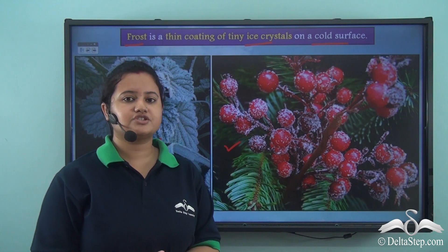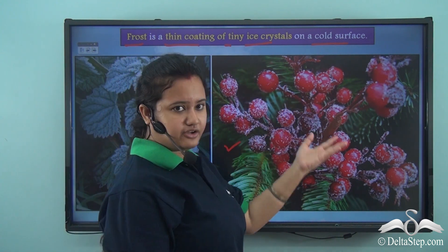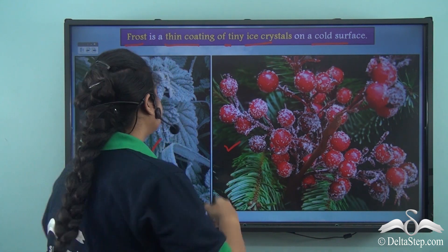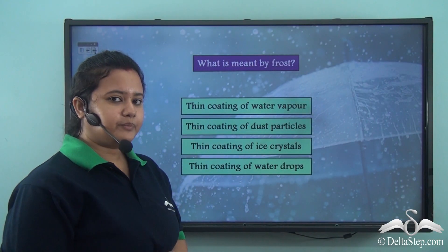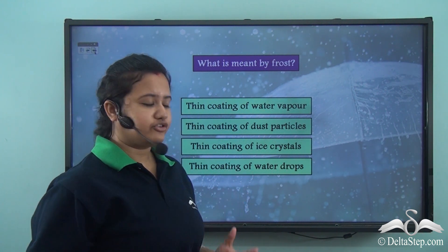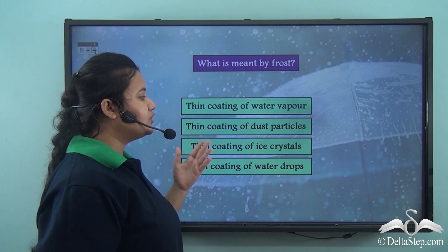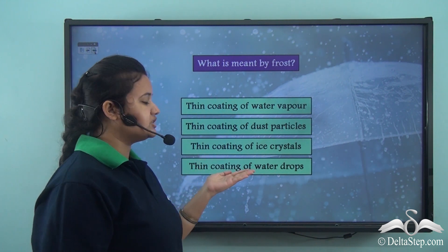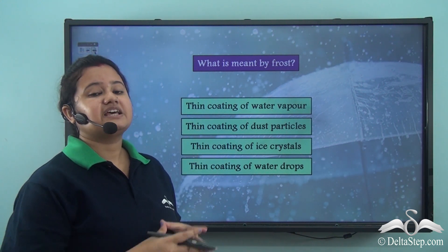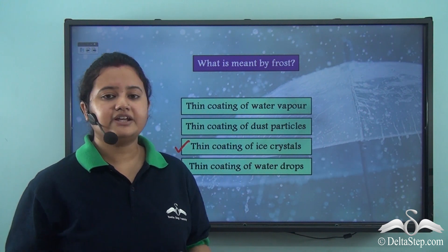What is frost? Is it a thin coating of water vapour, thin coating of dust particles, thin coating of ice crystals, or thin coating of water drops? The correct answer is frost is a thin coating of ice crystals on cold surfaces like leaves, berries, or any other fruits.